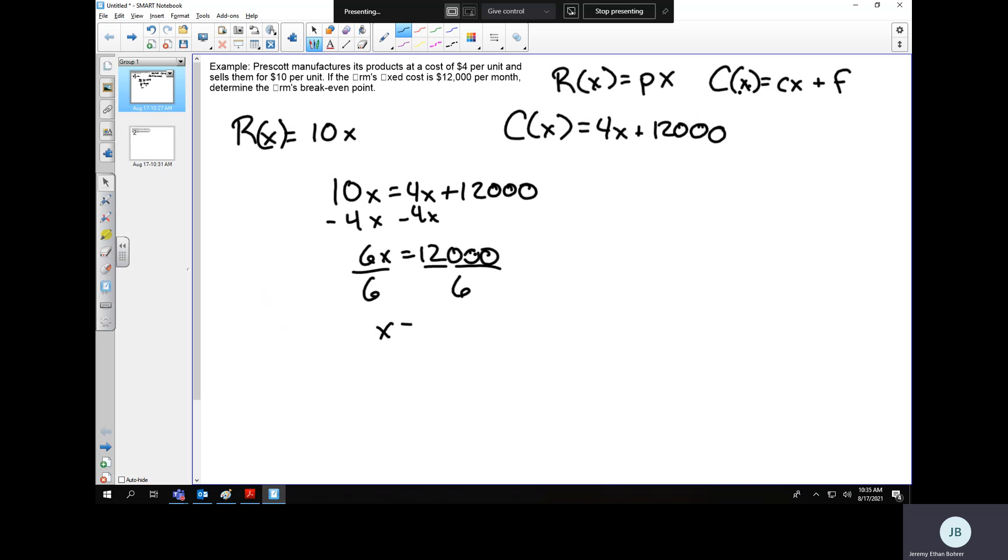Which gives me X equals 2,000. So when Prescott makes 2,000 units, they break even. Less than that, they're operating at a loss. And more than that, they're making a profit.